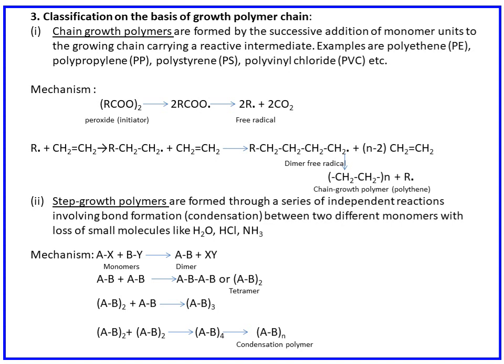Classification by growth of polymer chain: chain growth polymers are formed by successive addition of monomer units to a growing chain carrying a reactive intermediate — essentially addition polymers. Step growth polymers involve a series of independent reactions with bond formation between two different monomers with loss of small molecules like H2O, HCl, or ammonia — essentially condensation polymers.